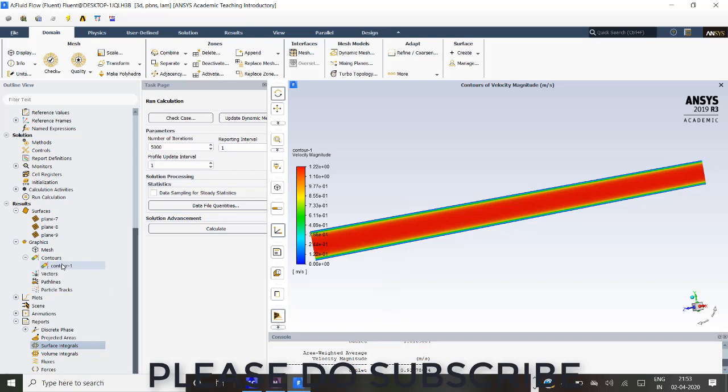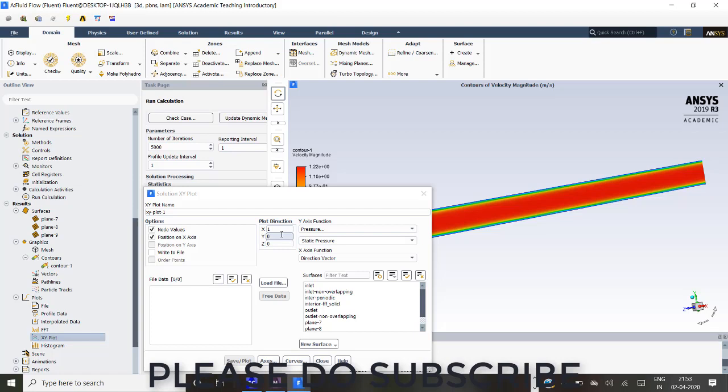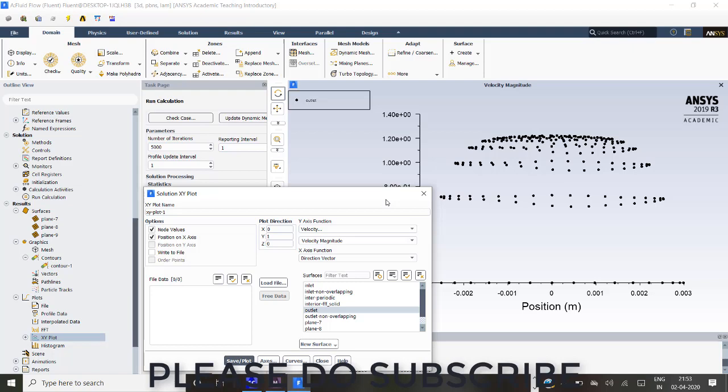We can have a plot also. We can go here plot XY plot. And direction vector is Y. It is not X, so it keeps X as zero and Y is 1. The velocity. Yeah, and it is an outlet, we can take plot.